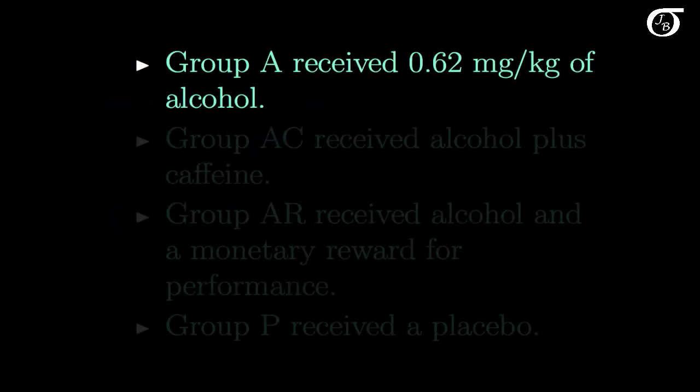Group A received 0.62 mg of alcohol per kilogram of body weight. For a little perspective, for a 100 kilogram male, this is approximately the alcoholic equivalent of 4.5 beers.